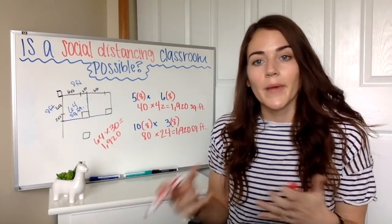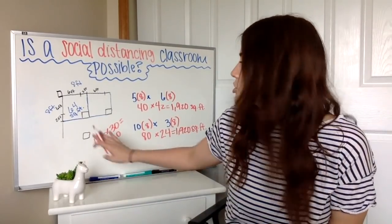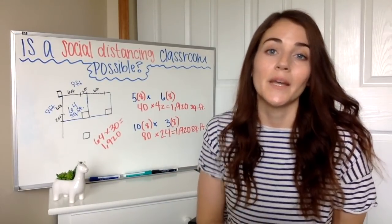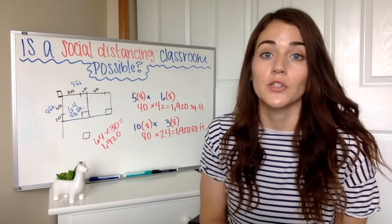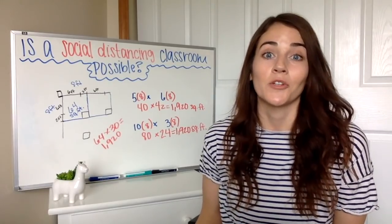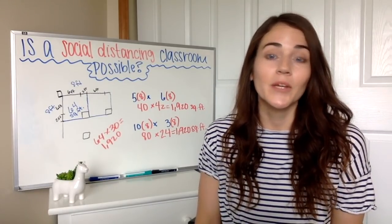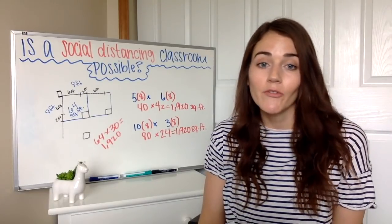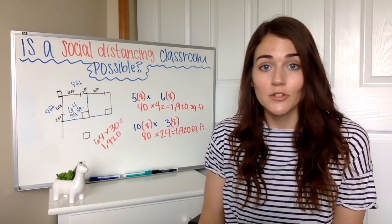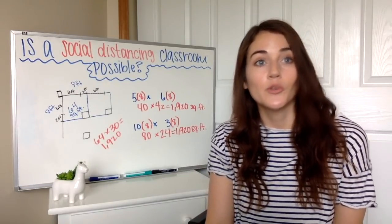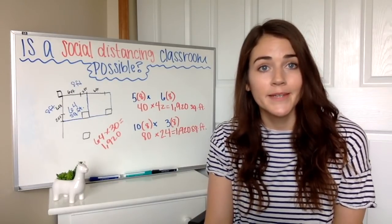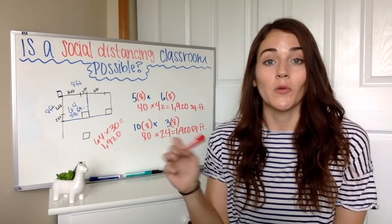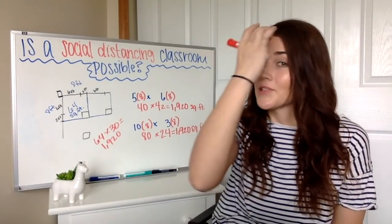If I have 30 students, I'm going to need a minimum of 1,920 square feet. I don't know about you, but that would be a pretty big classroom. I have an average size house — three bedrooms, two bathrooms — and that's bigger than the square footage of my house. And that would be just one classroom. So that's pretty big; that's kind of giving us a hint that this strategy is questionable.